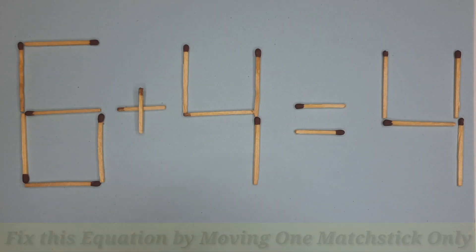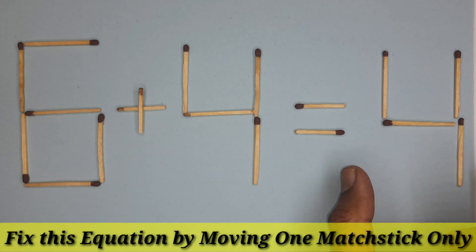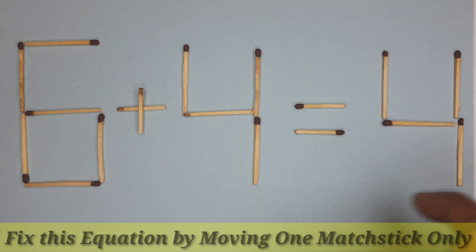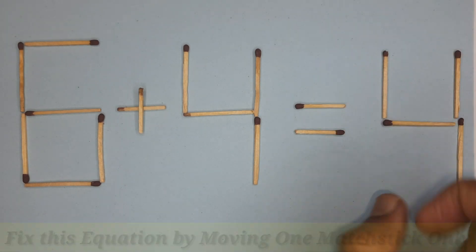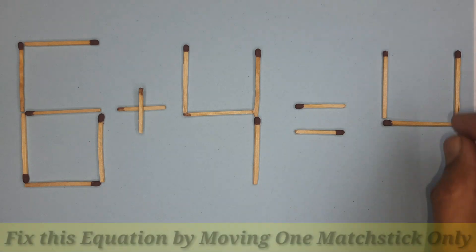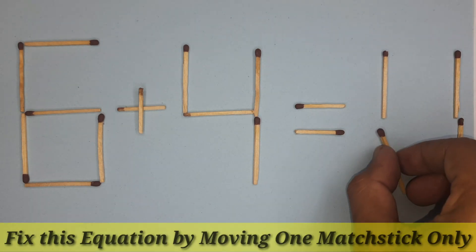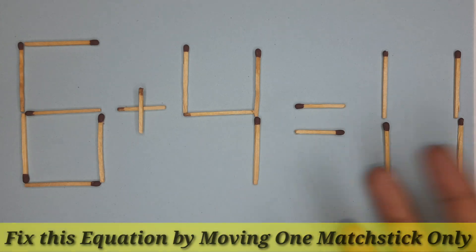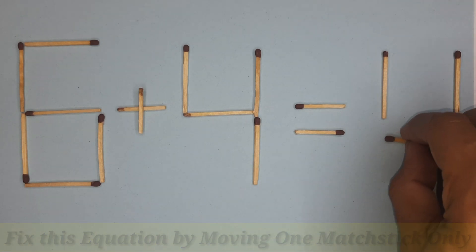You all know that. So either I should increase or decrease this portion, or increase this part. I cannot make 10 out of this 4. Yes, I can make 11 this way, but 6 + 4 is not 11, so this is not the option.